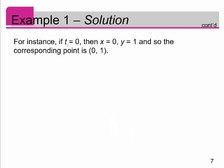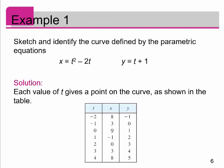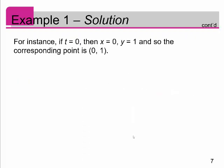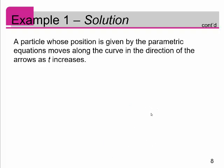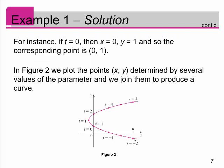For instance, when t is equal to 0, then x is equal to 0 and y is equal to 1, so the corresponding point is 0, 1 on the curve. When you plot all the points, you can see the corresponding x, y points on the graph. In figure 2 we plot these points determined by several values of the parameter and join them to produce a nice smooth curve. A particle whose position is given by the parametric equations moves along the curve in the direction of the arrows as t increases. The arrows indicate the direction that this particle is moving — that's important.